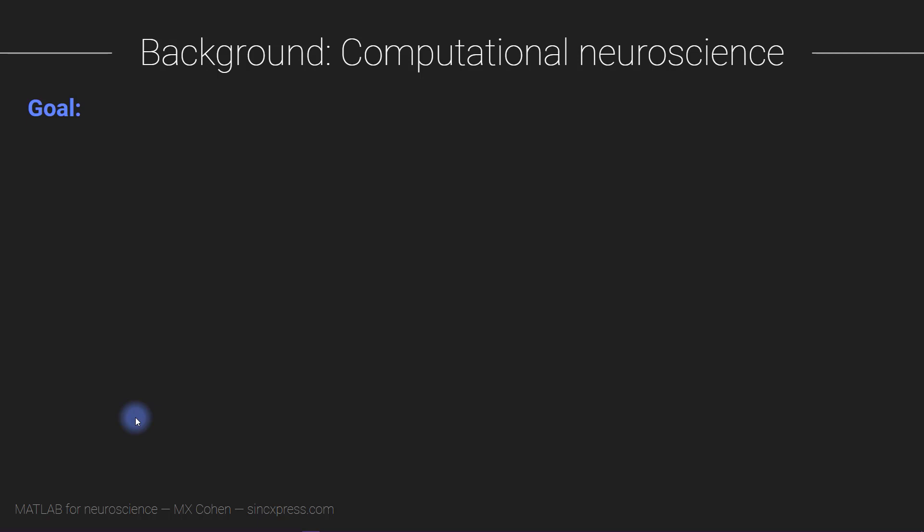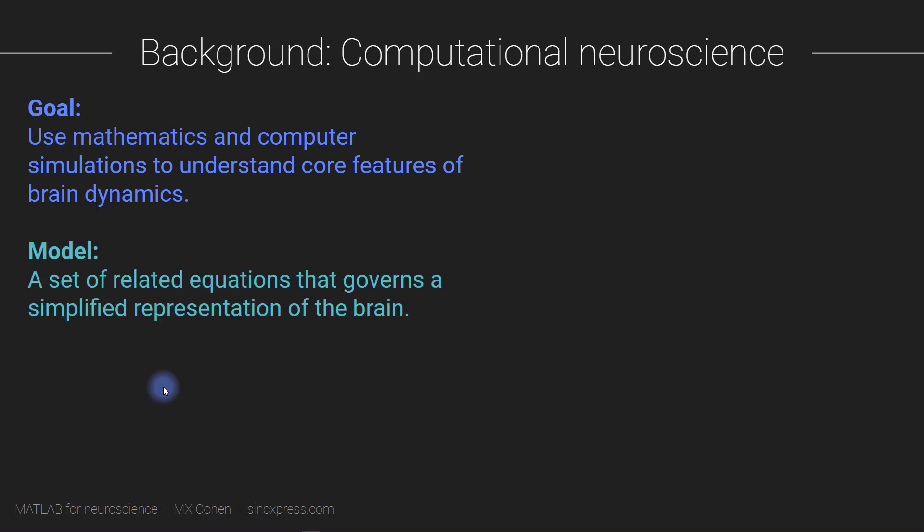Okay, so the general goal of computational neuroscience is to use mathematics and computer simulations to understand core features of brain dynamics. It's all based on running models of the brain, where a model is a set of equations that govern some simplified representation of how a neuron works or how a circuit or a system in the brain works.